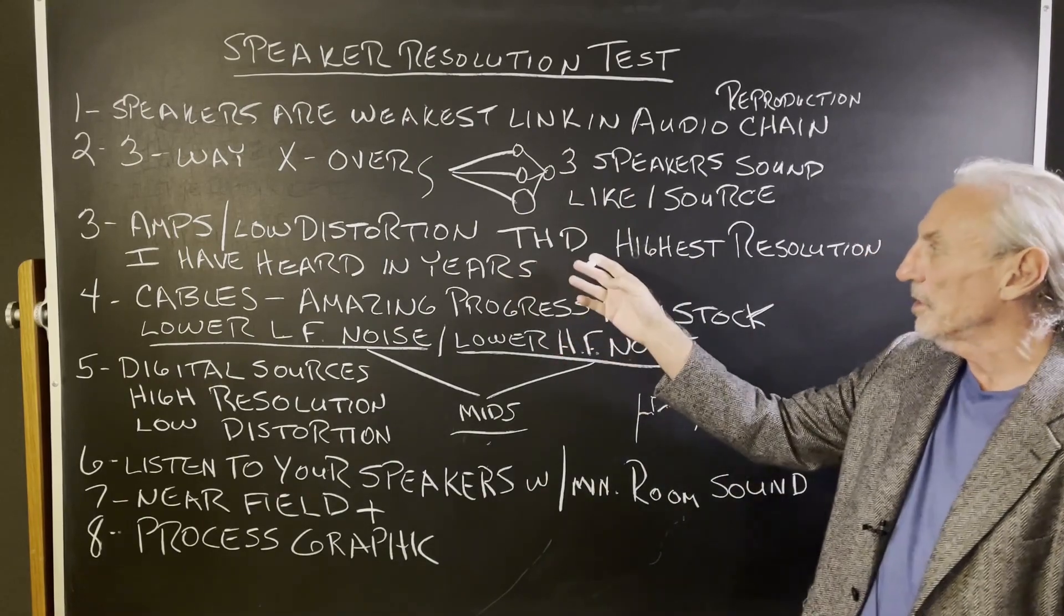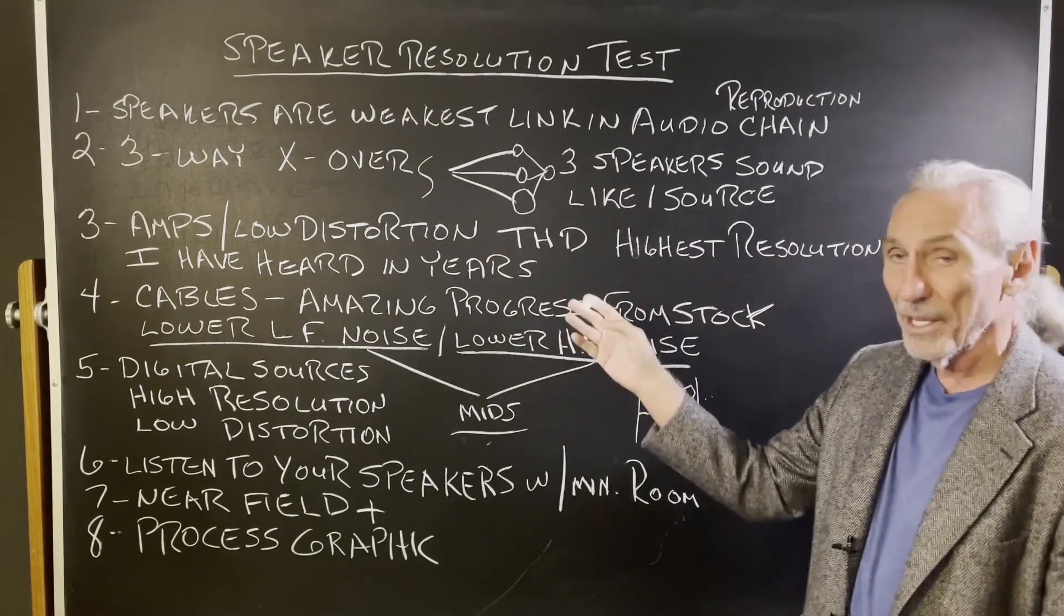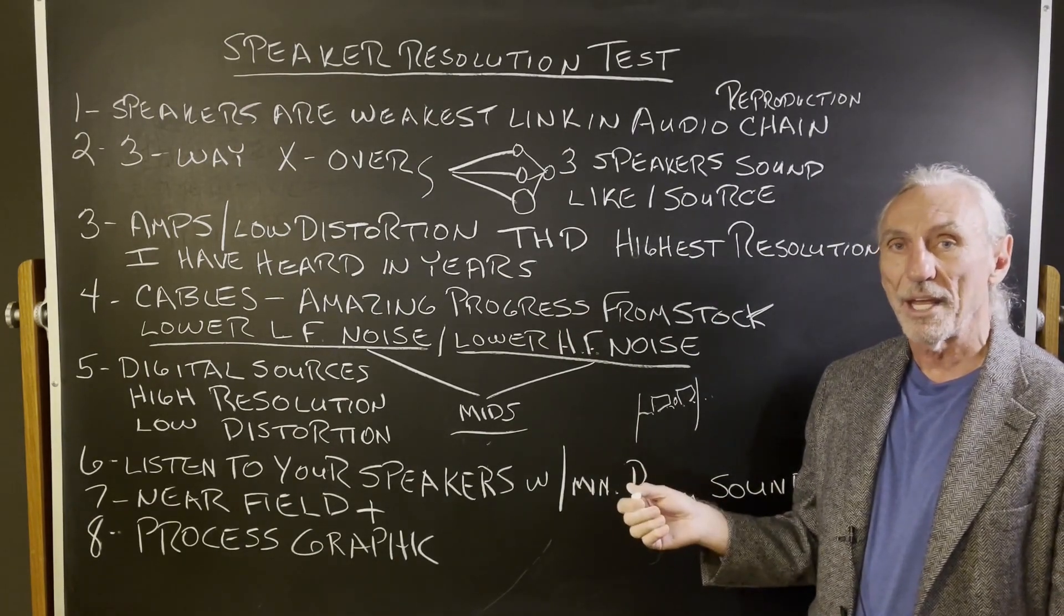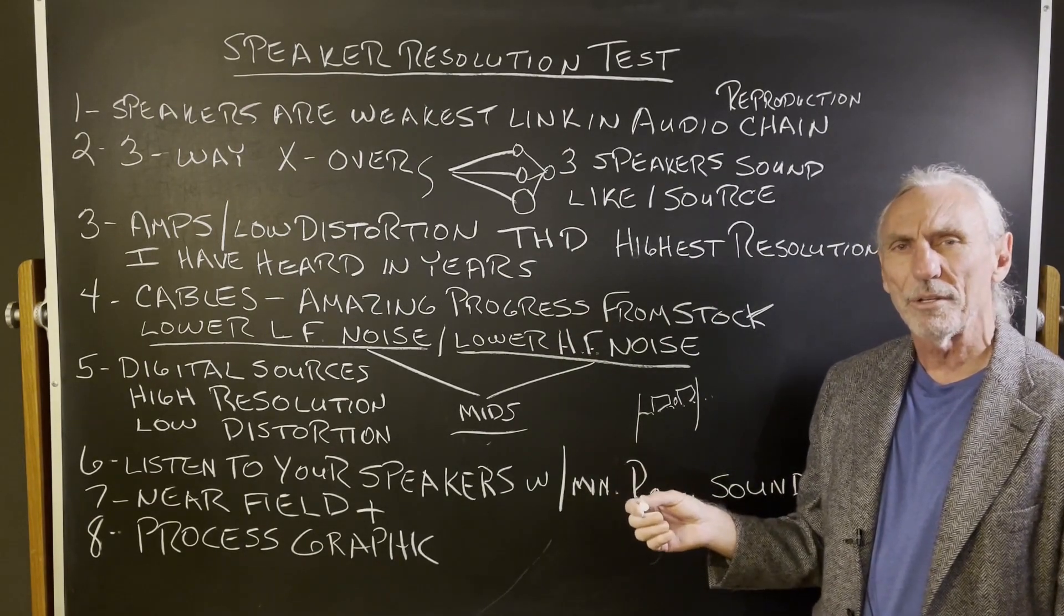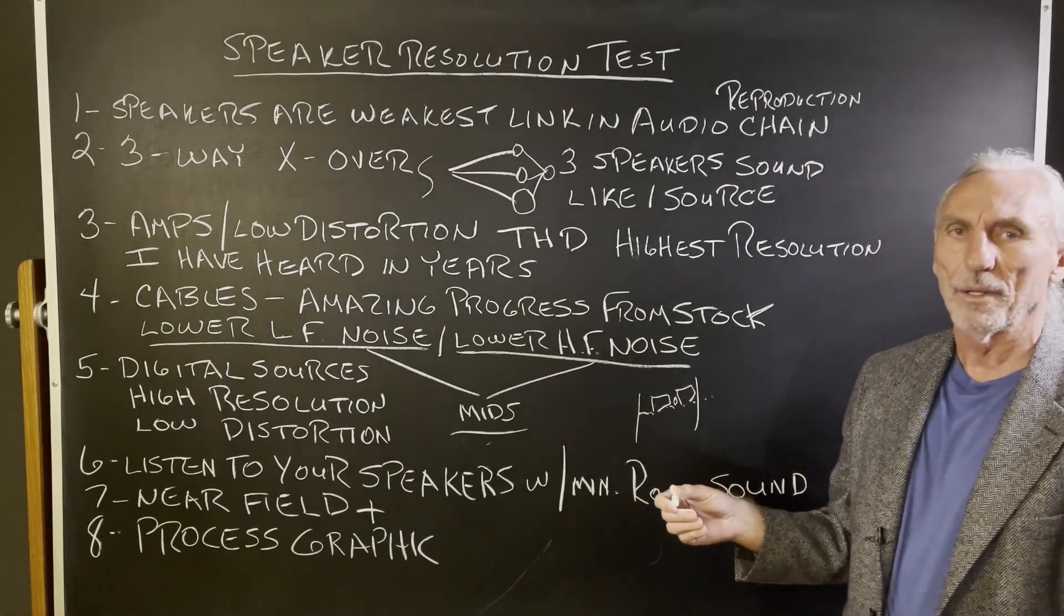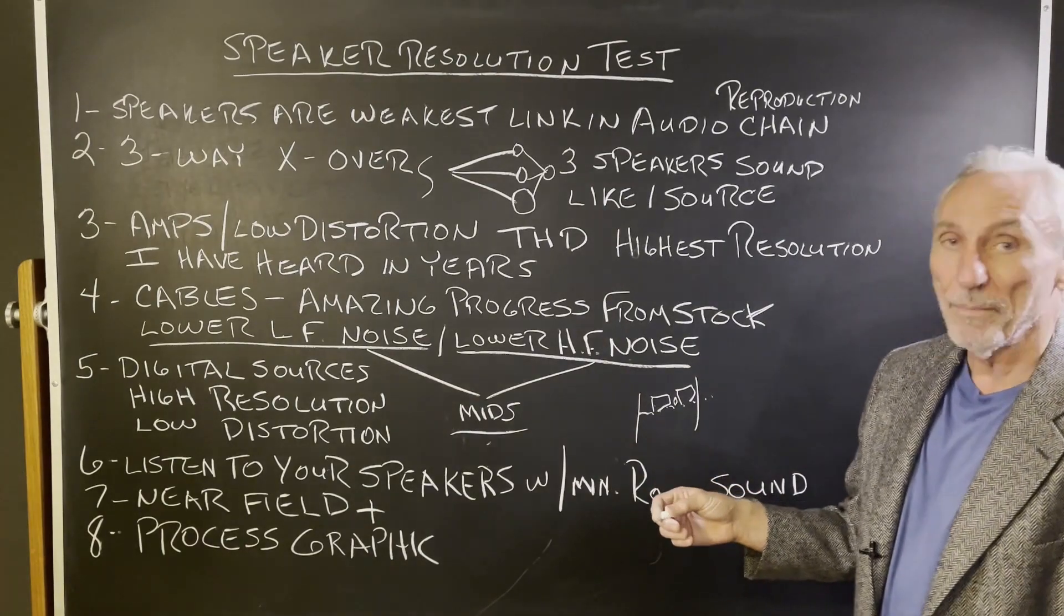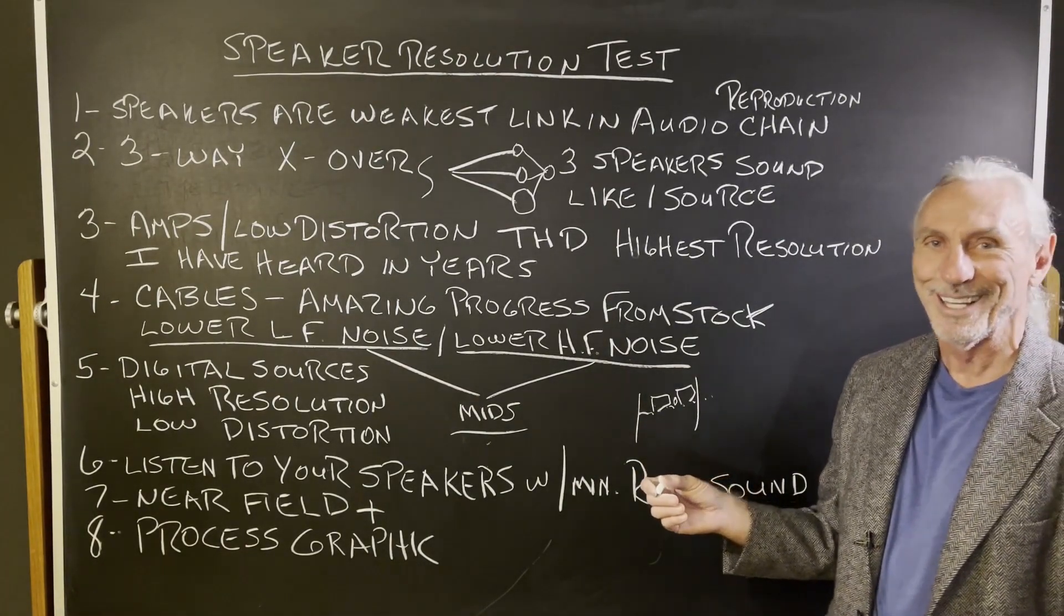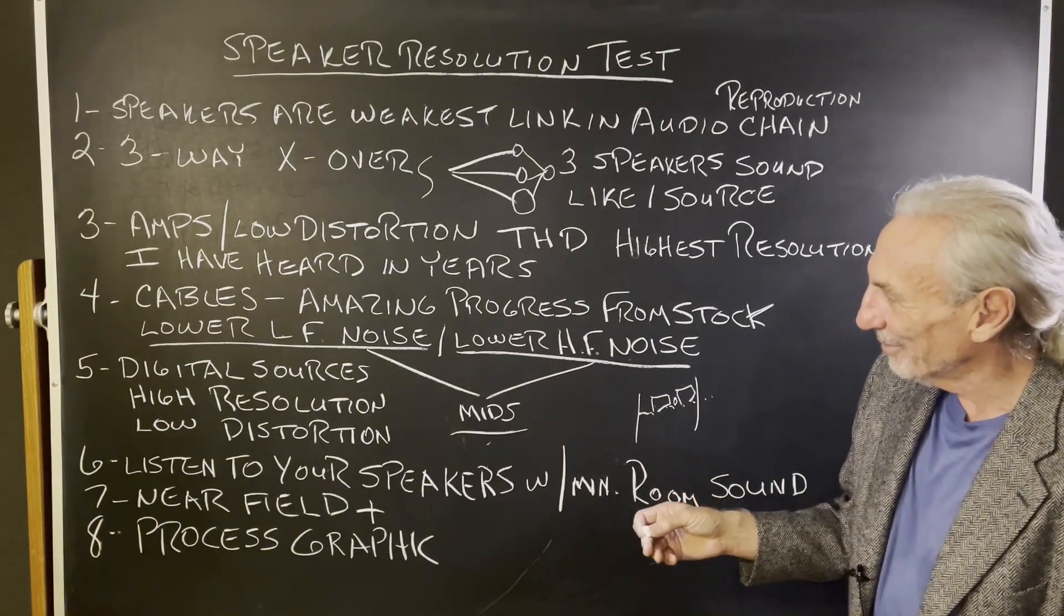Amps, low distortion, tonal harmonic, really low, high resolution. Highest resolution I've heard in years. We have a Class A amp. Plinius, I believe, is the company's name. Class A out of Australia. Wonderful amp. Pure Class A power. I keep my feet on it in the wintertime to keep them warm as I'm working at my desk. So it's really toasty.